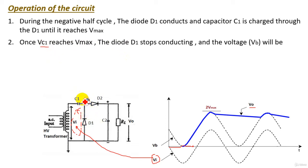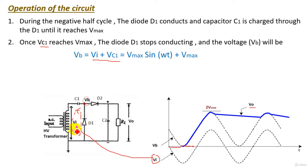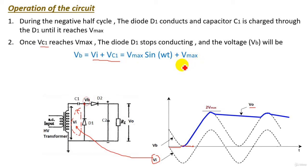At this moment, what is the voltage of this node, called V_B? By applying KVL in this loop, we will see that the voltage V_B equals V_input plus VC1. The input voltage is V_maximum·sin(ωt), which is a sinusoidal wave, and VC1 equals V_maximum since capacitor C1 is charged to V_maximum. So the waveform of node V_B will be a sinusoidal waveform shifted by a value of V_maximum, as shown by this dotted line.